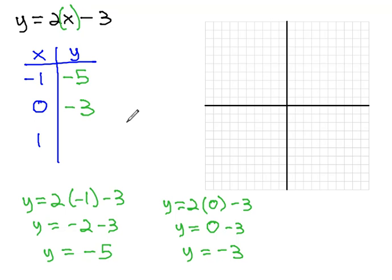One more value to plug in, 1. Y is equal to 2x, or 2 times 1, minus 3. This gives us y equals 2 minus 3, or y equals negative 1. This tells us that when the x value is 1, the y value is negative 1.